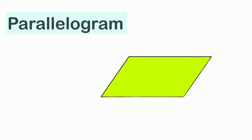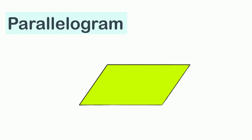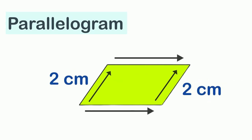This is a parallelogram. It has four sides — one, two, three, and four — and four corners — one, two, three, and four. It looks similar to a rectangle but two of its sides are always slanted. The opposite sides of a parallelogram are parallel to each other and of the same size. For instance, these two parallel sides are two centimeters and these two parallel sides are four centimeters.